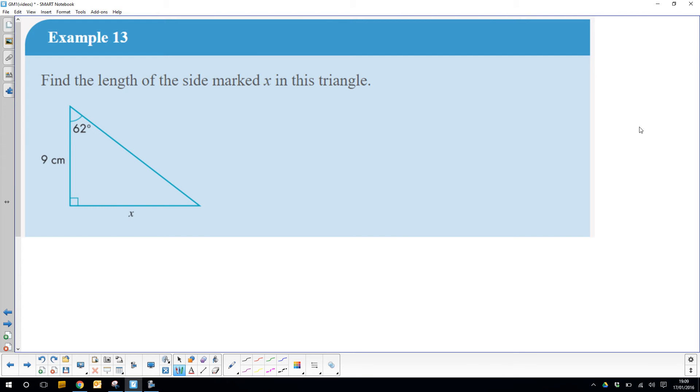So 11h was the sine function, 11i was the cosine function or the ratio, and now we're going to use the tan function. So Example 13: firstly, angle opposite and adjacent sides means I must be using tan.